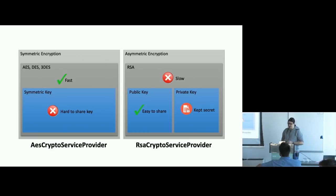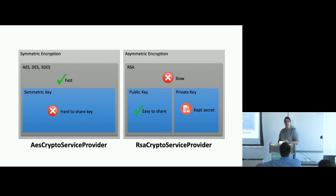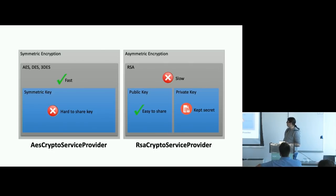Traditionally in .NET, if you're going to do some encryption, you might use classes like AES Crypto Service Provider for AES encryption, and RSA Crypto Service Provider for RSA-based encryption. Both are fairly straightforward to use, but there are definite advantages and disadvantages to both.